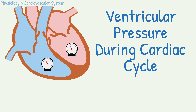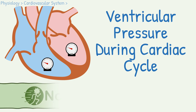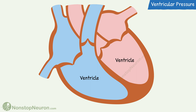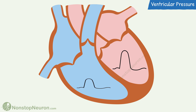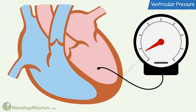In this video, we will study changes in ventricular pressure during a cardiac cycle. We know that the heart has two ventricles. During the cardiac cycle, similar events occur in both ventricles, so the type of pressure changes is also similar. The main difference is that the pressure in the right ventricle is on the lower side compared to that in the left ventricle at any given point. We will be discussing the pressure in the left ventricle, but similar changes occur in the right ventricle as well.